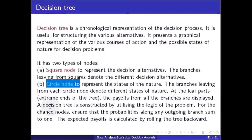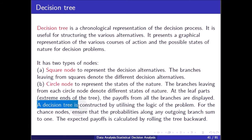A decision tree is constructed by utilizing the logic of the problem. For the chance nodes, ensure that the probabilities along any outgoing branch sum to one. The expected payoff is calculated by rolling the tree backward.